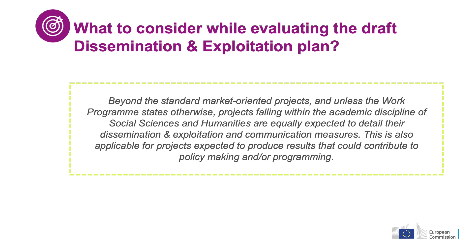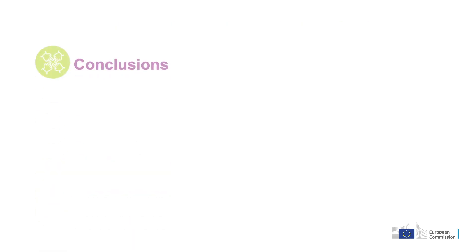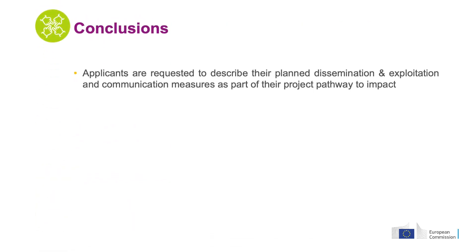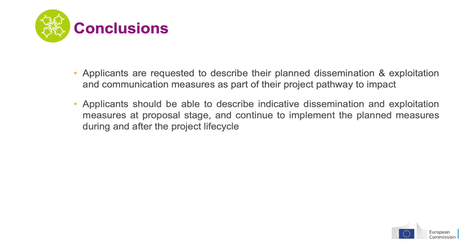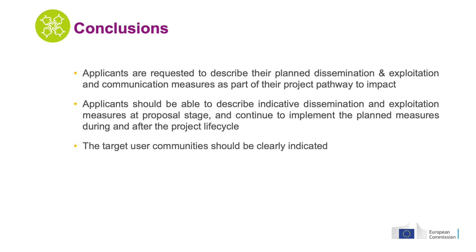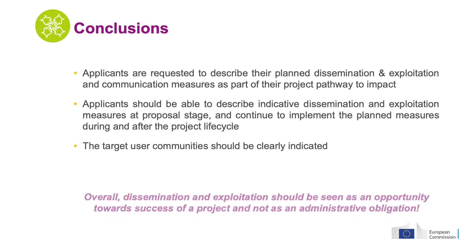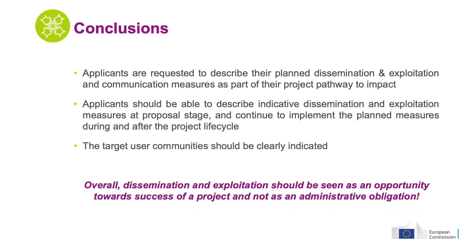If applicants do not provide concrete information, the score will be lowered. In a nutshell, applicants are requested to describe their planned dissemination, exploitation and communication measures as part of their project pathway to impact. The proposed measures should cover both the project implementation lifecycle and beyond. The target user communities should be clearly indicated. Overall, dissemination and exploitation should be seen as an opportunity for the success of a project and not as an administrative obligation.